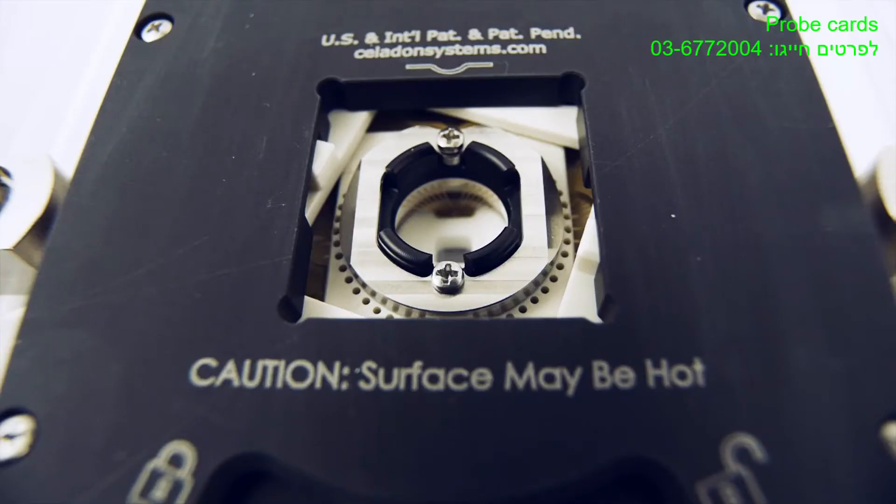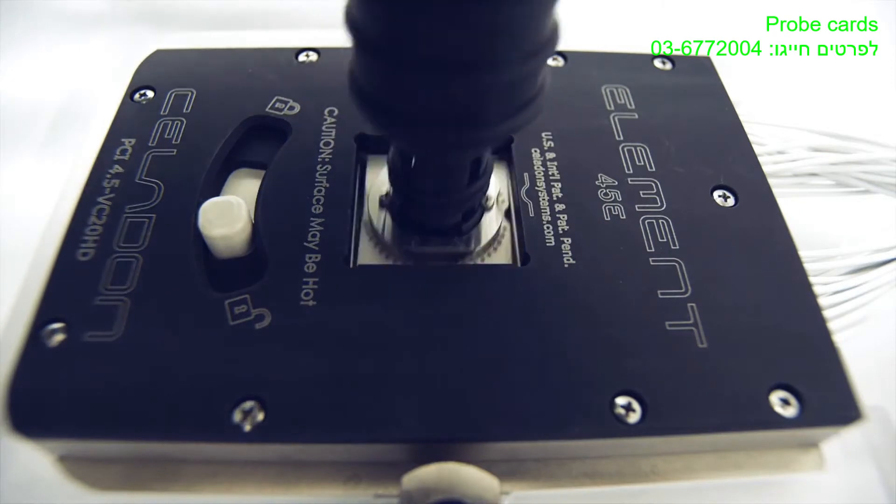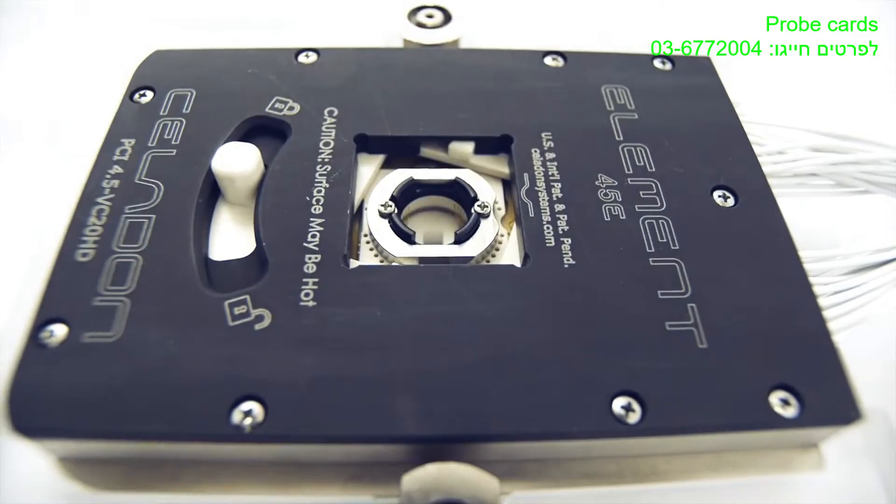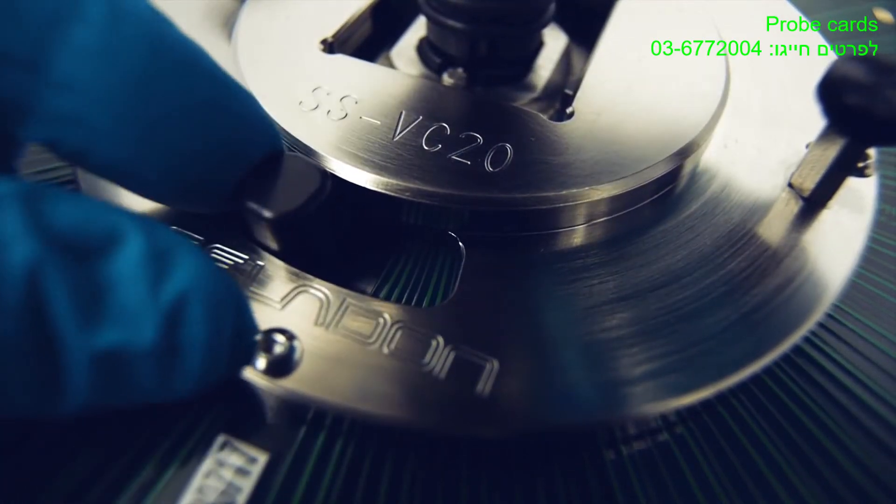Interfaces hold the VC20s in place with a simple locking mechanism. Both the 45E and 4080E can be stored with probe cards installed. There's ample clearance in the bottom of the carriers for the probe tips.